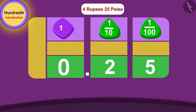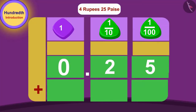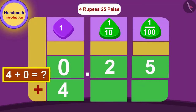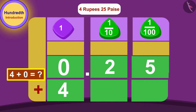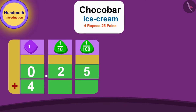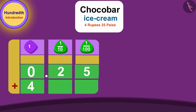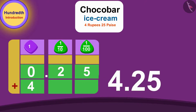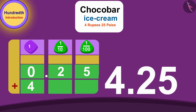The number written here becomes zero point two five. Now if we add zero to four, we still get four. In this way, we can write the new price of chocobar ice cream as four point two five rupees using the decimal point.